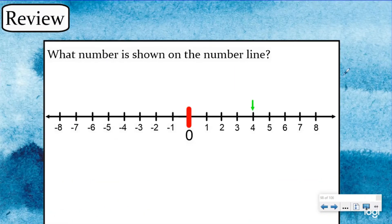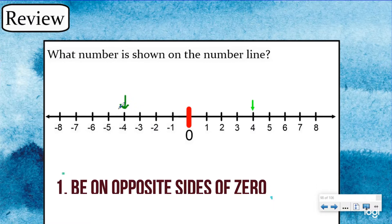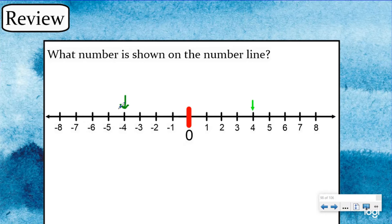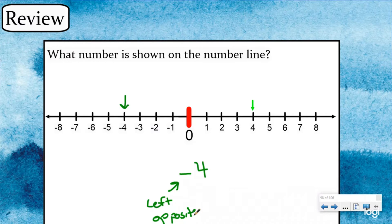Our review question says: what number is shown on the number line? Here I have a positive four. If I want the opposite of positive four, obviously that would be negative four. What did we learn about opposite numbers? Well, there has to be an opposite side to zero and they have to have the same absolute value — you have to be the same distance away from zero. Now if we look closely at negative four, we know that this negative sign can tell us two things: it can tell us to go to the left of zero, and it can also tell us that it is the opposite of a positive number. This is true because we've always been starting at zero — we always start at zero and then count four units to the left, because the negative sign is directional.